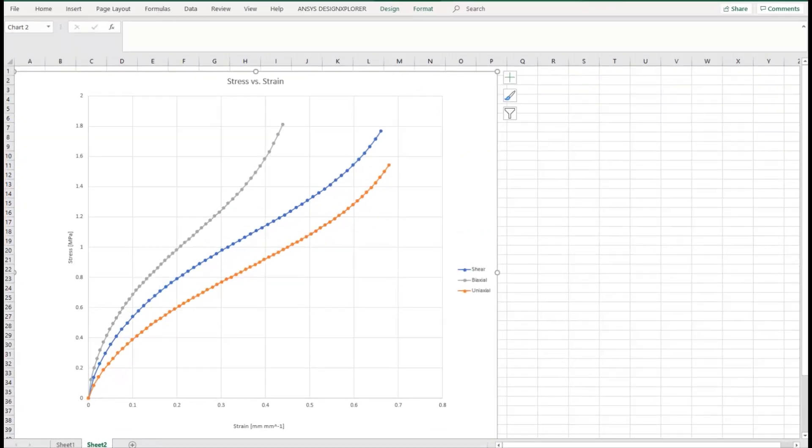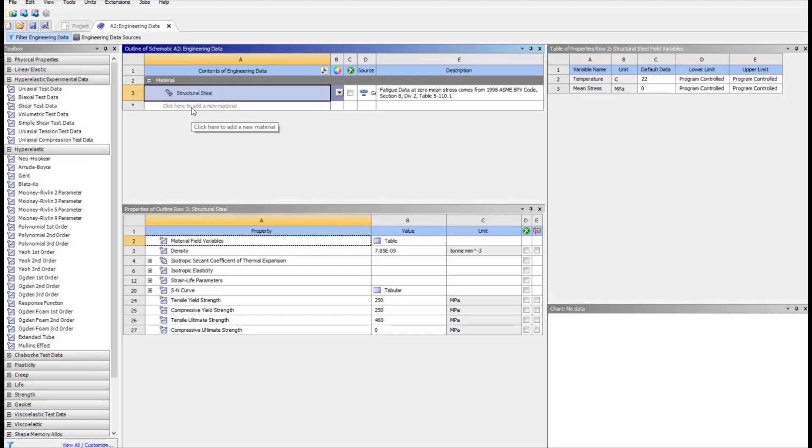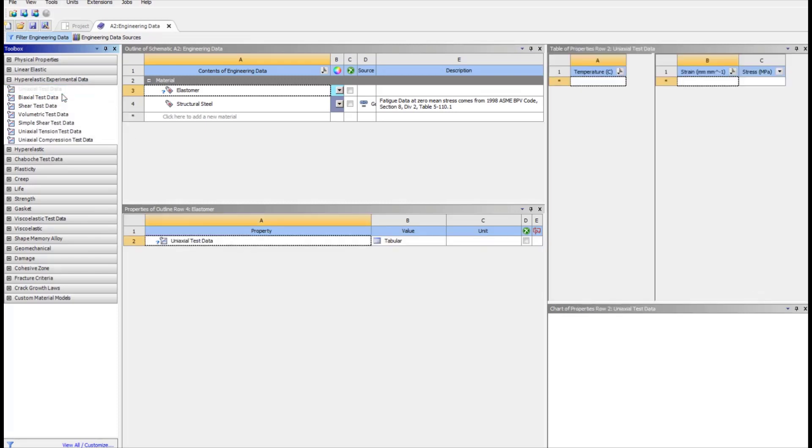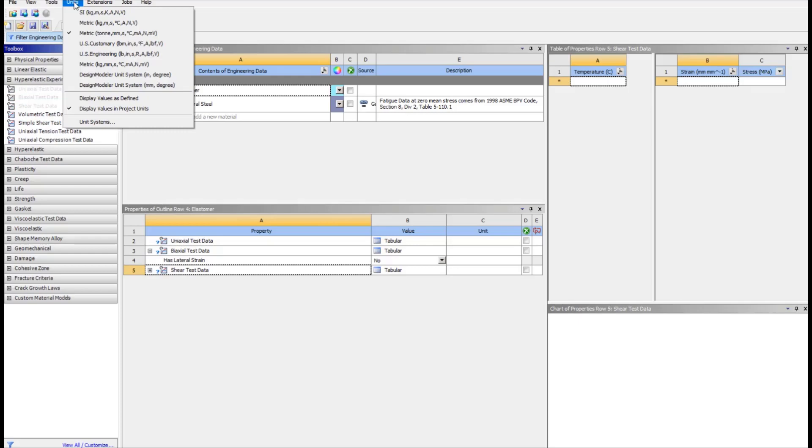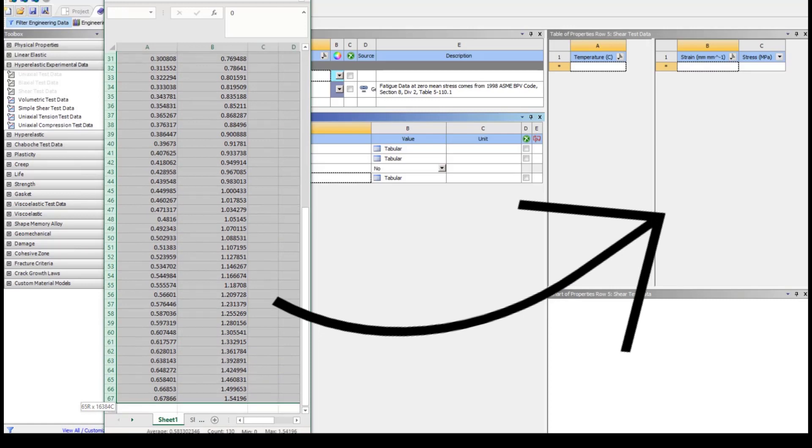As a first step, let's open workbench and insert a new static structural module. Go to engineering data, add a new material and name it as elastomer. Next, right mouse click and include property on uniaxial test data, biaxial test data and shear test data from toolbox under hyperelastic experimental data. Make sure that the project units are set to the same units as data and then copy the data set to the respective objects.